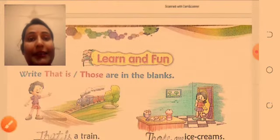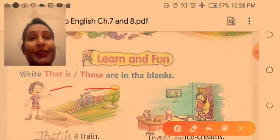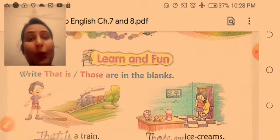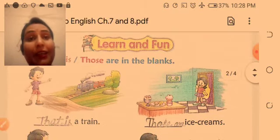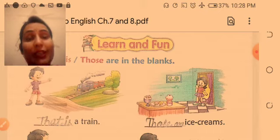Yes, remember both have the condition that the objects are at a distance. But what is important is if the object is a single object, it means only one object, so you have to use that is. And if there is more than one, use those are.